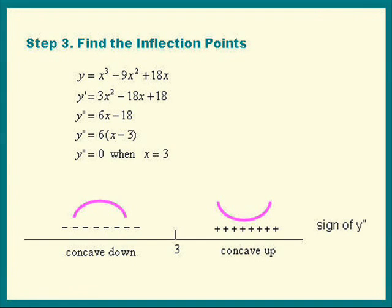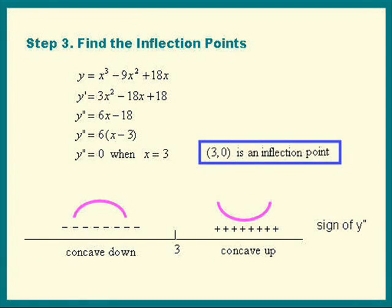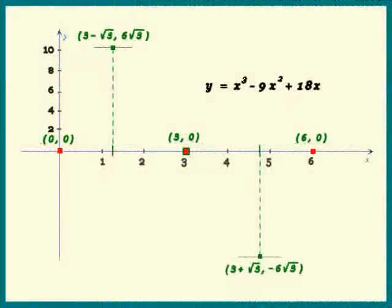So we do have an inflection point at x equal to 3. And remember, that was one of our intercepts, 3 comma 0.